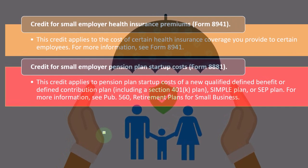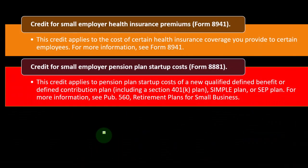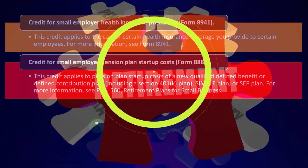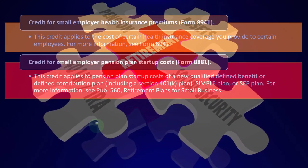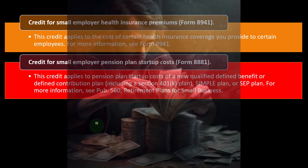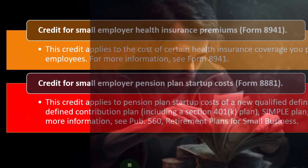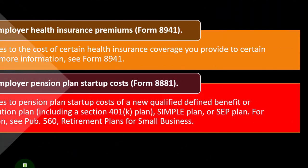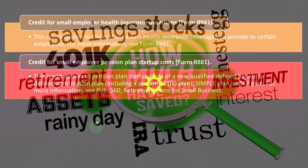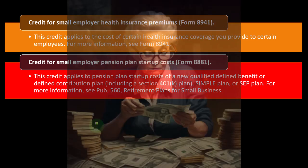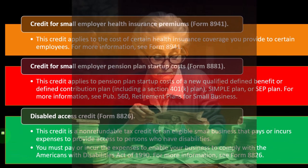The Credit for Small Employer Pension Plan Startup Costs is on Form 8881. This credit applies to pension plan startup costs of a new qualified defined benefit or defined contribution plan, including a Section 401(k) plan, SIMPLE plan, or SEP plan. These come up fairly often for small businesses, as a retirement plan is one of the biggest benefits you can provide to an employee — and also beneficial to the employer. For more information, see Publication 560, Retirement Plans for Small Business.